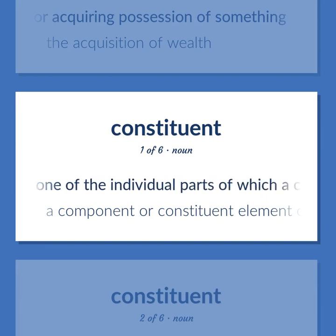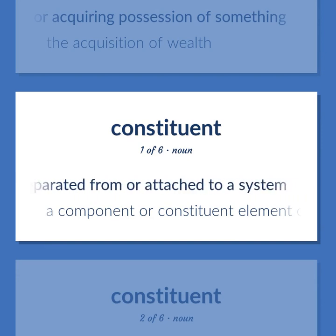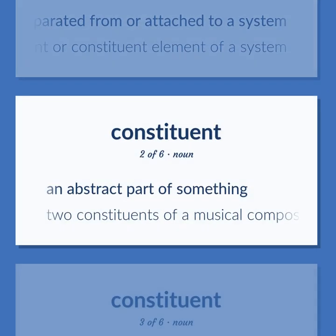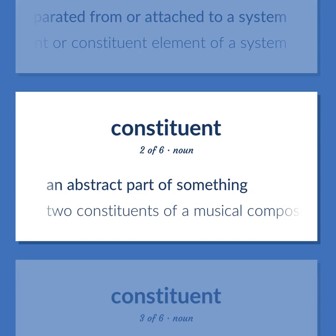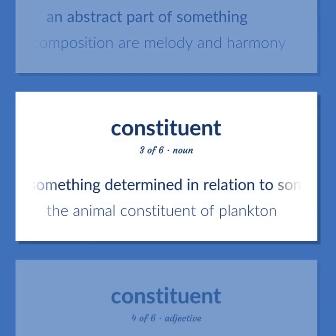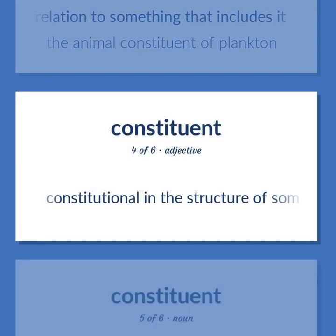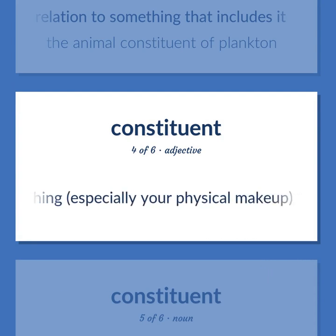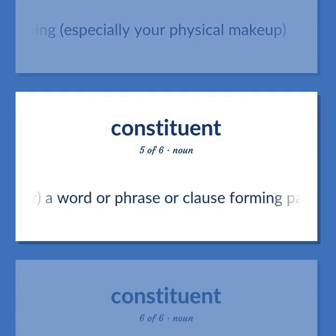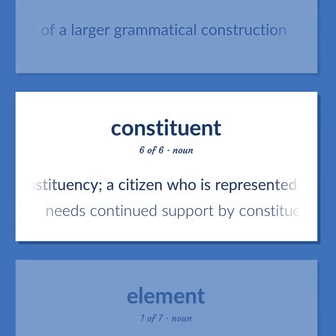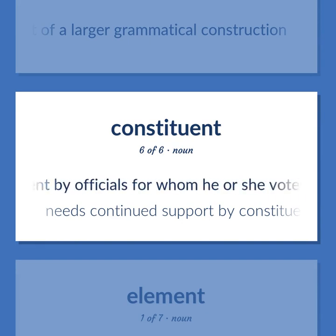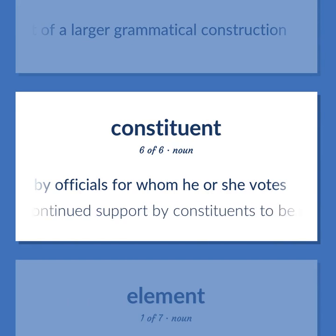Constituent: An artifact that is one of the individual parts of which a composite entity is made up, especially a part that can be separated from or attached to a system. A component or constituent element of a system. An abstract part of something. Example: Two constituents of a musical composition are melody and harmony. Something determined in relation to something that includes it. Example: The animal constituent of plankton. Constitutional in the structure of something, especially your physical makeup. Grammar: A word or phrase or clause forming part of a larger grammatical construction. A member of a constituency; a citizen represented in government by officials for whom he or she votes. Example: Needs continued support by constituents to be re-elected.